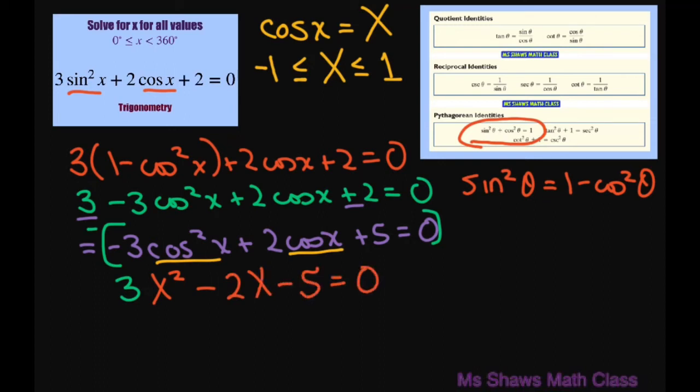That way it's going to be easier to factor. So when you factor that, you're going to get 3 big X minus 5 times big X plus 1 equals 0. So our big X is going to equal 5 divided by 3, or big X is going to equal negative 1.